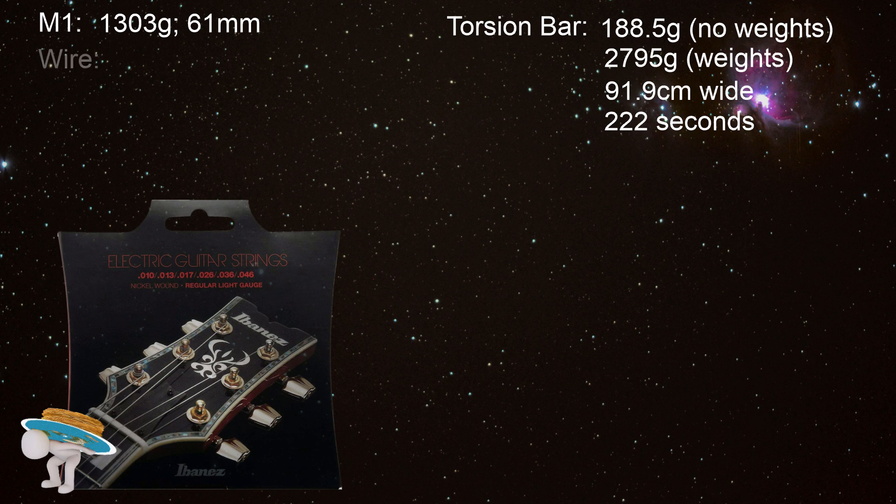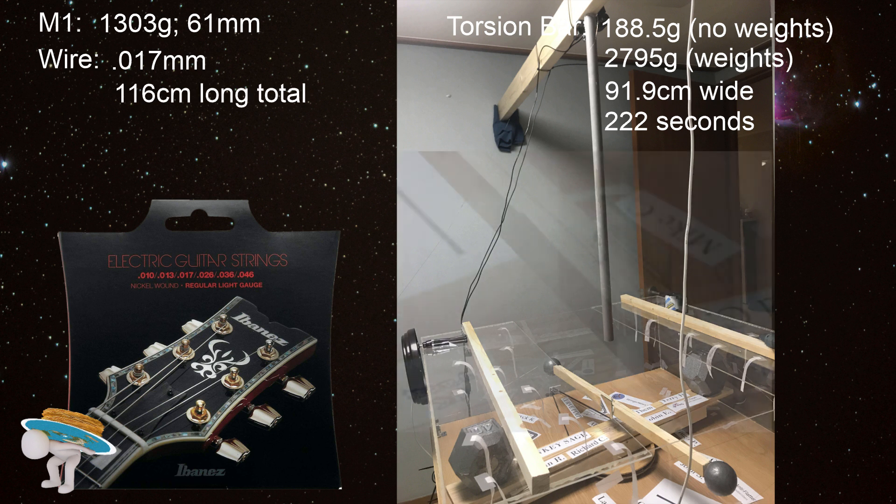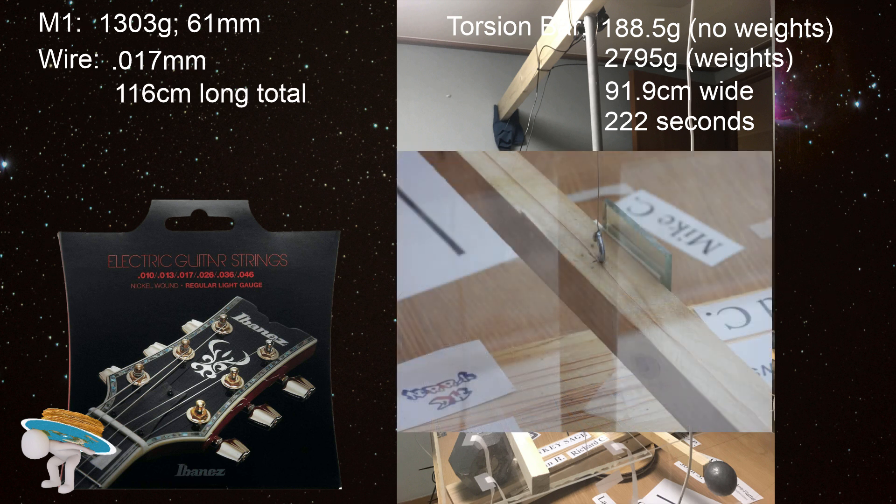The torsion bar was mounted on a .017 guitar string wire, and it was hung 116 centimeters from the suspension. Adding in two 7-millimeter i-hooks brings the wire's total length to 114.6 centimeters.